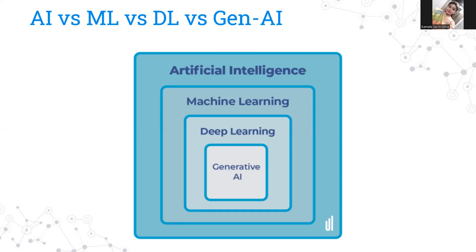Deep learning is also a very important area — it is a subset of machine learning, as I mentioned, that uses artificial neural networks. The difference between machine learning and deep learning is that in deep learning we go deeper, using artificial neural networks to learn and make decisions based on complex data inputs. This is inspired by the structure and functioning of the human brain. Just as humans store experiences in neurons, deep learning took reference from the functioning of the human brain, and from that it evolved into an important and very trendy subfield of AI.